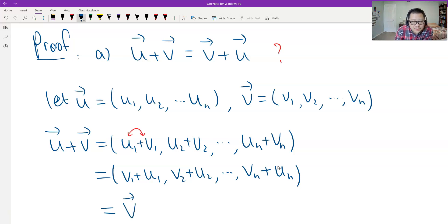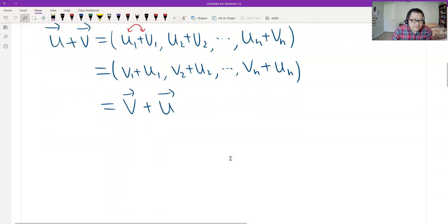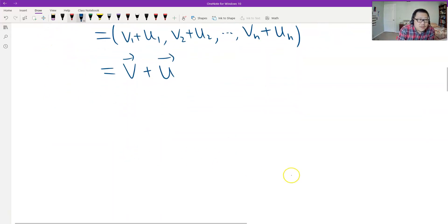And then see, this is just vector v plus vector u, by the definition. So the commutative works.